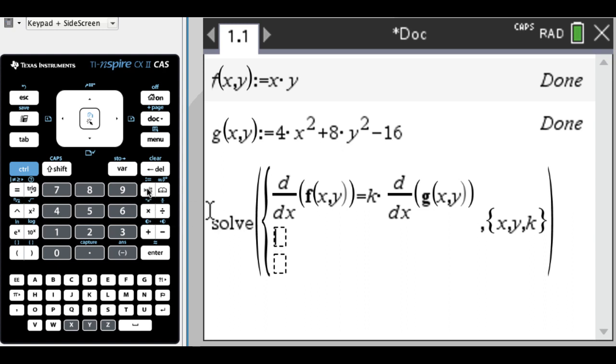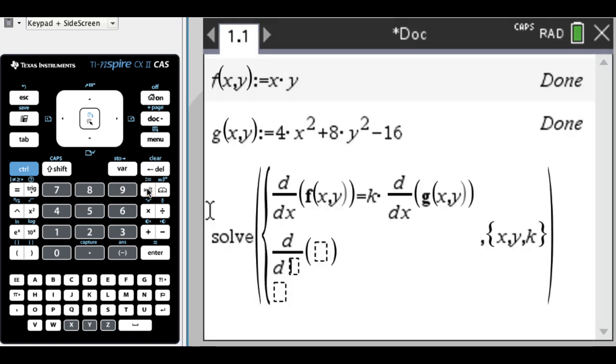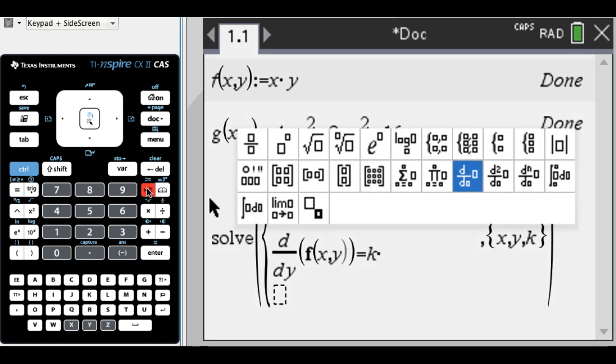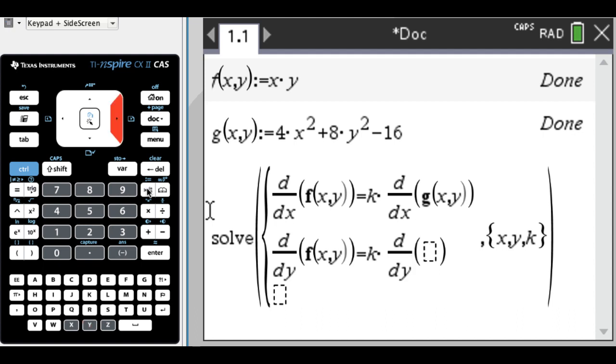But for some reason I can't use that, so I'm going to type it, so partial y, f of x, y, equals k times partial y, or the derivative with respect to y, of g of x, y. Okay, so that's basically the gradient of f equals lambda times the gradient of g, and then I also have to solve g of x, y is equal to 0, so when I press enter.